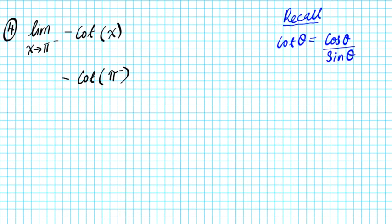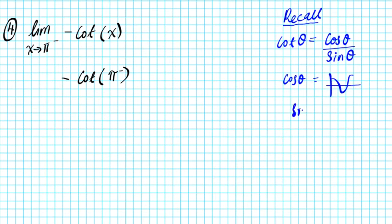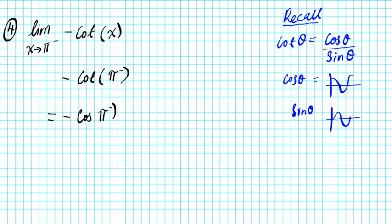We're going to reduce this into a sine and cosine case so we can use the graphs to finish it off. Remember that the cosine graph looks like cups and the sine graph looks like S's. So we reduce this to negative cosine of pi from the left divided by sine of pi from the left, because cotangent is cosine over sine.